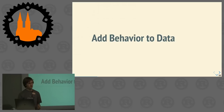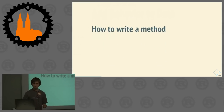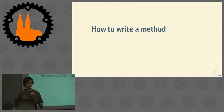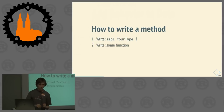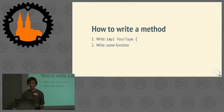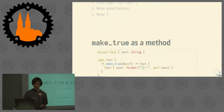How do you add behavior to data? In most programming languages, there is a concept called a method. You may be asking, how do you write a method in Rust? The answer is rather simple. You write `impl` and the name of your data type, open curly brackets, and then you write some function — maybe copy-paste in the function you just saw on the previous slide. Now our example looks like this, and we have a method.